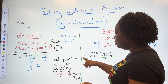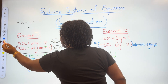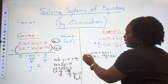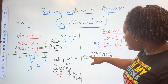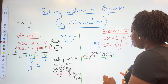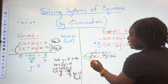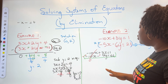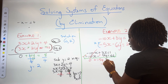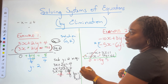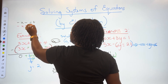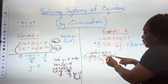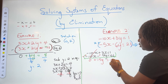Now which operation do we need to eliminate the x's? If you said subtract, you're correct — because a minus times a minus gives a positive, turning negative 10x into plus 10x, and negative 10x plus 10x equals zero. For the y terms, negative times negative 12 gives positive 12, so we get 3y plus 12y equals 15y. For the constants, a negative times a positive 46 gives negative 46, so 1 minus 46 equals negative 45.